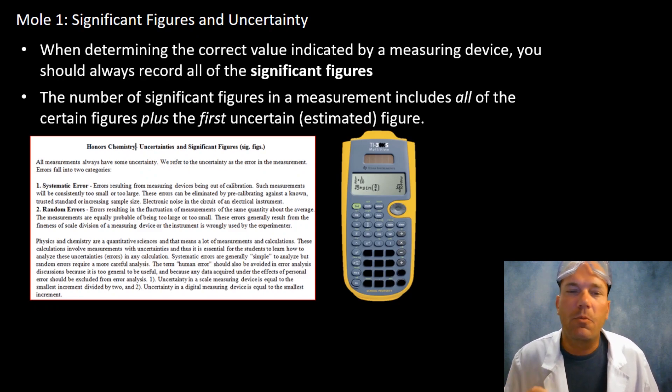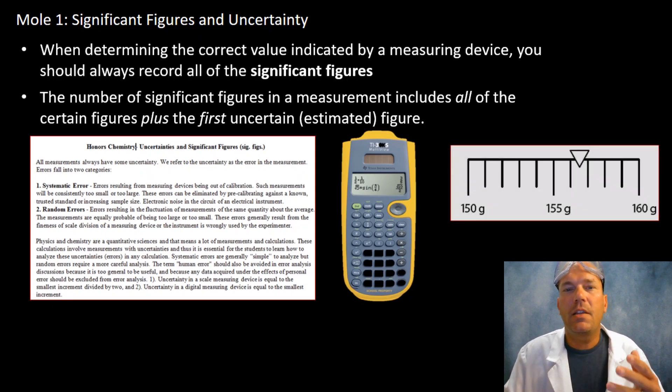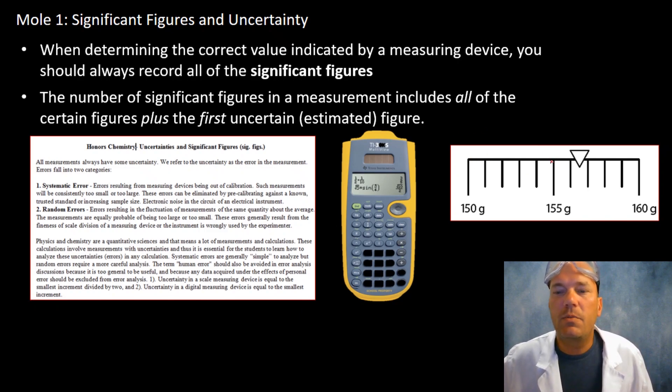The details are in this handout and I'll go over them a little bit with you, but essentially you're going to be measuring that first uncertain increment. If we look at this measuring device we see 155 grams, 156 grams, and then we're right in between 56 and 57.